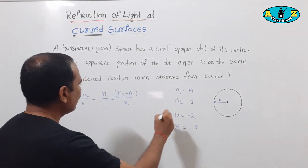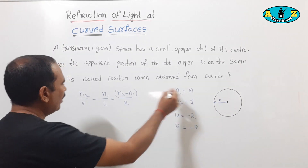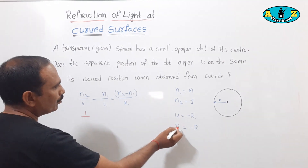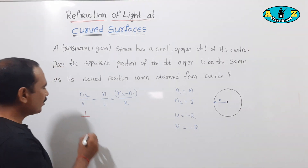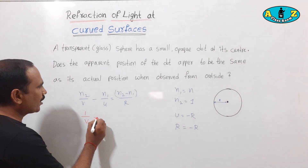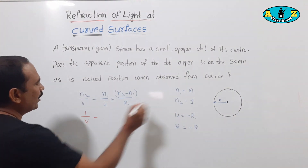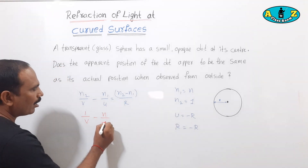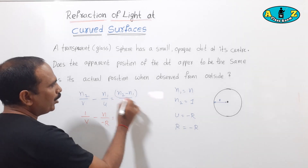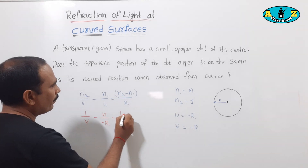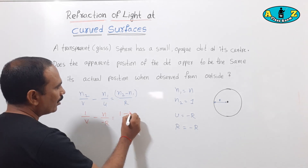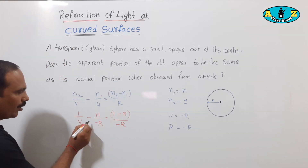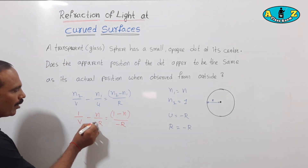Now substitute these values in the curved surface formula. Here n2 equals 1, so 1 by v; the image distance is v, which we do not know. And minus n1, where n1 equals n. The object distance is minus r, equal to n2 minus n1 which is 1 minus n, divided by minus r. Now simplify this equation — minus and minus becomes plus.